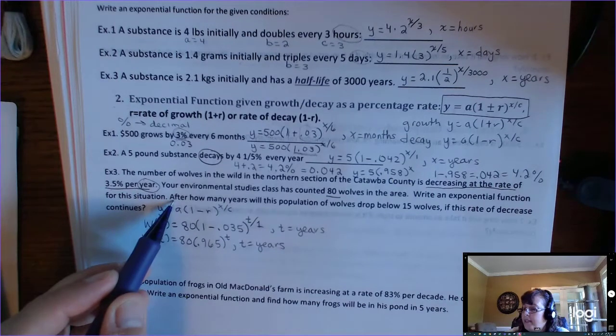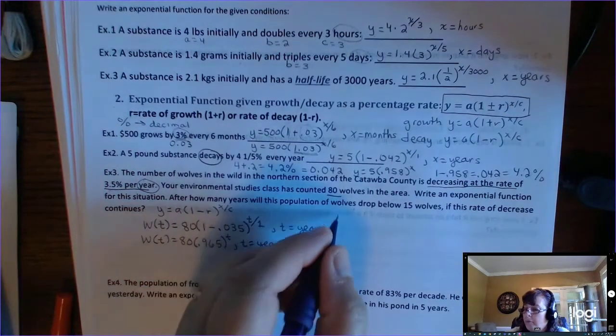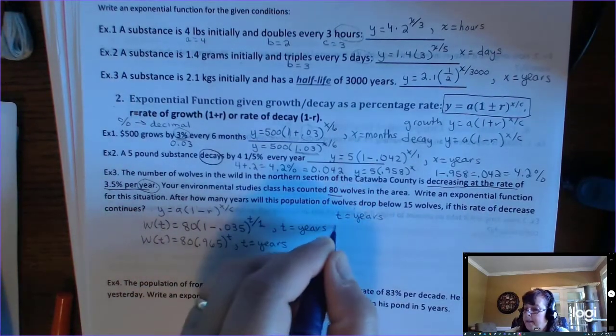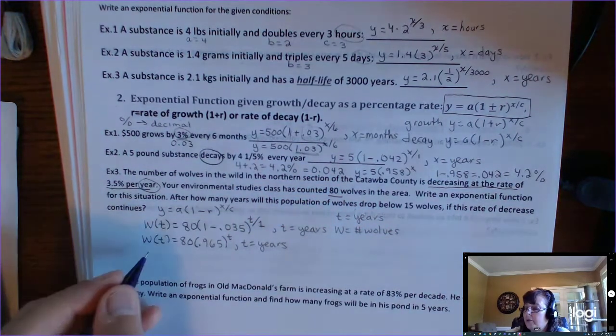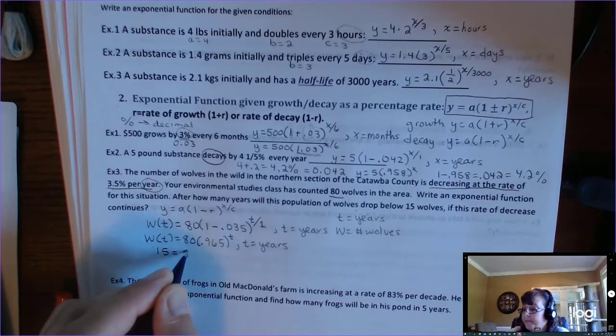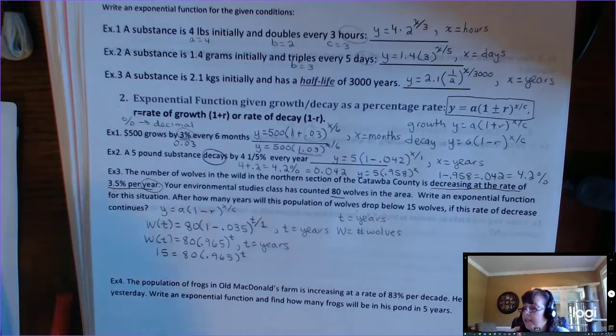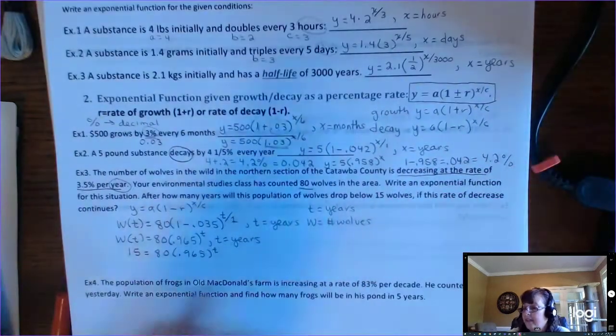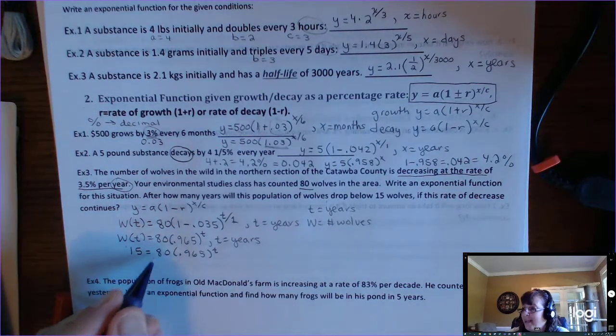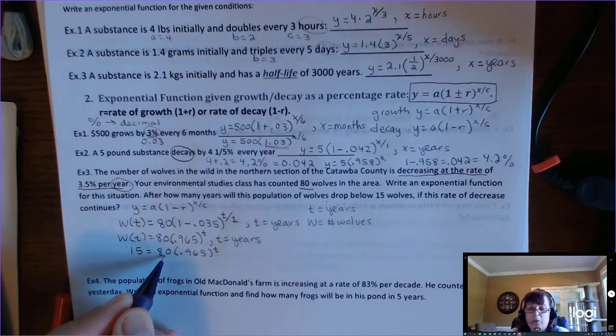Now we can answer this question. After how many years will this population of wolves drop below 15 wolves? Well, remember, t is years. That's our input. And w is number of wolves. That's our output. So I've given you an output-input question. You would have to put 15 in here and solve for t. So in a previous video, I showed you how to solve exponential equations. So now we get to practice that. So what we want to do, remember, you have to divide out this number here. I call it the initial value. Now you know why. In a word problem, it's always the initial value. You have to divide that out first.